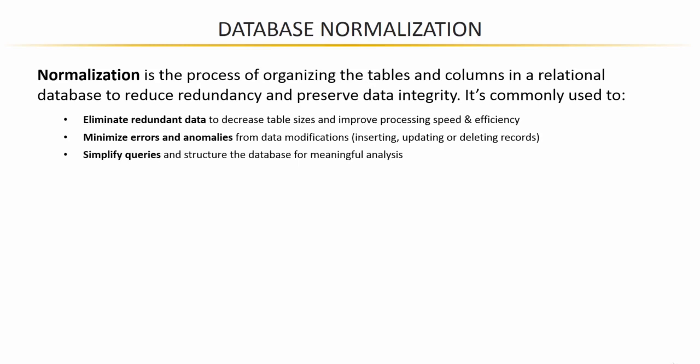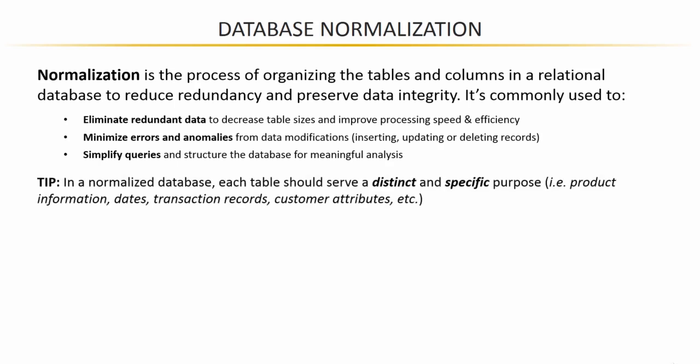It still feels kind of overcomplicated, so my tip to remember what normalization is all about is to think of it this way: in a properly normalized database, every table should serve a distinct and specific purpose. You might have one table that only gives you information about products, another that only gives you information about dates like a calendar table, one that's only daily transactional records, and another that's only about customers. This should sound familiar because these are the exact type of tables we're using in the AdventureWorks demo.